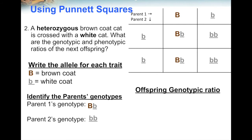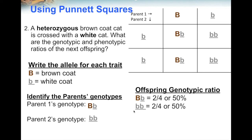Now figure out what the offspring will have as a genotype. There are two different genotypes: heterozygous genotype happens in two of the four boxes, or 50% of the time. Homozygous recessive also happens in two of the four boxes, or 50% of the time. That means the next kitten has a 50% chance of being heterozygous or a 50% chance of being born homozygous recessive.